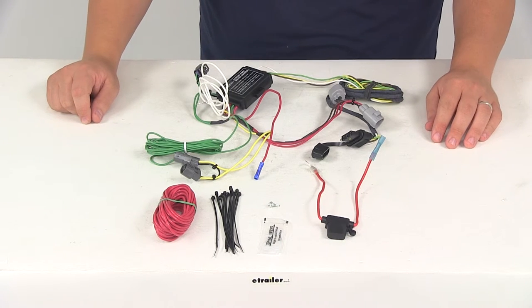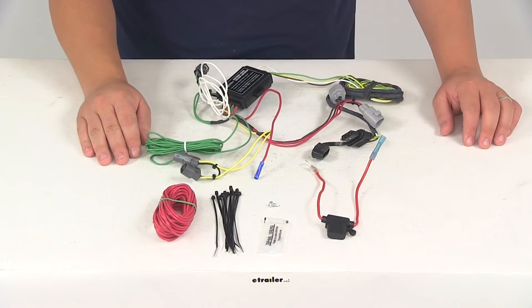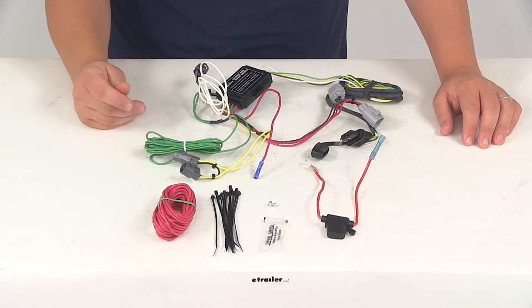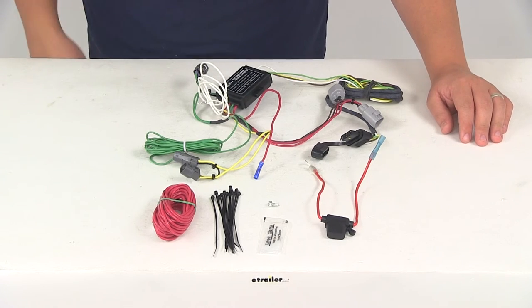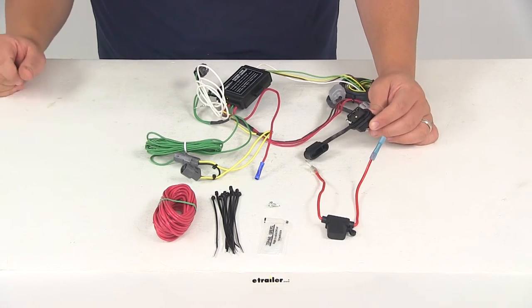Once you have all that connected, you'll need to go ahead and secure the wiring harness with the extra zip ties that are included with the kit. Make sure all your wires are secured up and out of the way, and then once you're done, the four-way connector is going to be stowed beneath the vehicle near the trailer hitch.